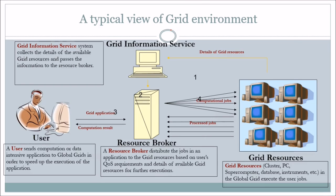Let us see how exactly your request goes and how your processing is done. The user sends a computation or data-intensive application to global grids in order to speed up the execution of the application. These grids are not at your local level — they may be anywhere, and you are not aware of it.